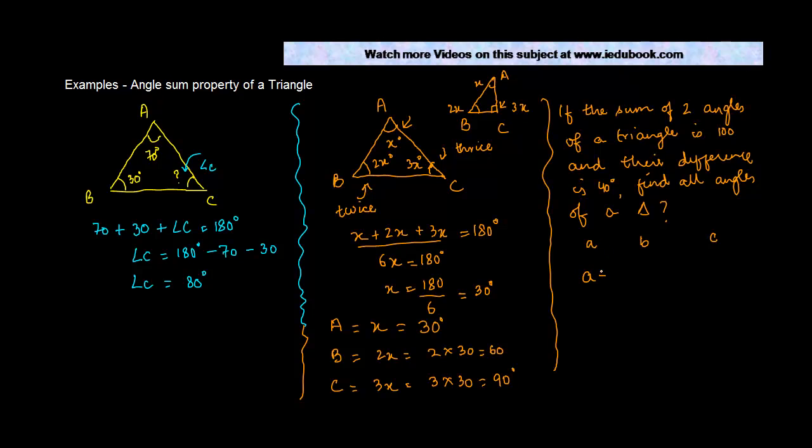So let's call the angles as A, B, and C. We are told that A plus B is equal to 100 and A minus B is equal to 40. So this is pretty simple. You just add these two equations. This will give you 2A equals 140 degrees, so A is equal to 140 divided by 2, which is 70 degrees.